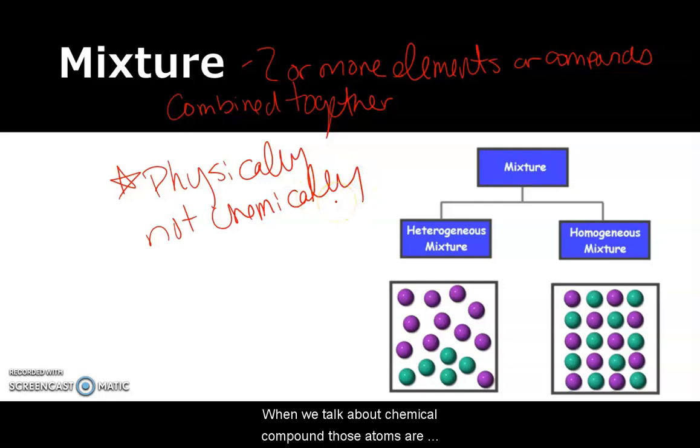So when we talk about a chemical compound, those atoms are actually sharing electrons. There's a bonding between them, whereas in a mixture they're just occupying the same space. So if we're looking at our little diagram over here, we've got each of these represents a molecule. There's all those different molecules in the same space. They're combined together, but they're not chemically combined. They're just physically occupying the same space. There are two different types of mixtures.